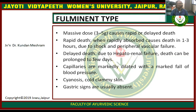Fulminating type: a massive dose of 3–5 grams causes rapid or delayed death. Rapid death: when rapidly absorbed, it causes death in 1–3 hours due to shock and peripheral vascular failure. Delayed death: due to hepatorenal failure, death can be prolonged. Capillaries are markedly dilated with a marked feeble pulse. Cyanosis and cold clammy skin are also found, and gastroenteric signs are usually absent.